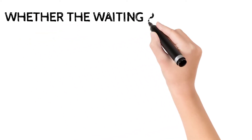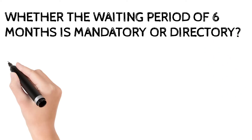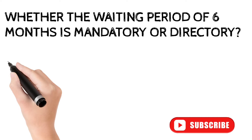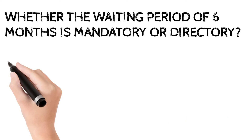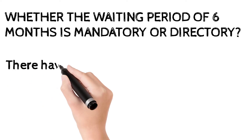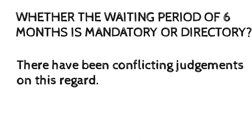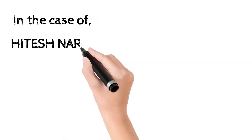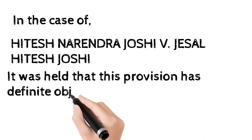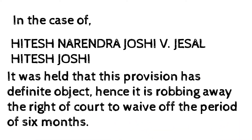Another important question is whether the waiting period of 6 months is mandatory. Under Section 13B, there is a 6-month waiting period for both parties. In the case of Hitesh Narendra Jushi vs Jaisal Hitesh Jushi, it was held that this 6-month period is a mandatory period. The object is to allow for reconciliation between the two parties, and the court held that this period cannot be waived and is mandatory.